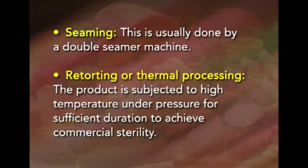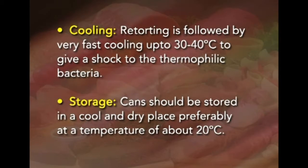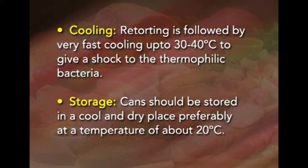Mechanical exhausting creates a vacuum seal and the cans are sealed by a double seamer machine. The next step is retorting or thermal processing, where the product is subjected to high temperature under pressure for sufficient duration to achieve commercial sterility. After retorting, fast cooling to 30–40°C is essential to give a thermal shock to thermophilic bacteria. Finally, cans should be stored in a cool, dry place, preferably at about 20°C.